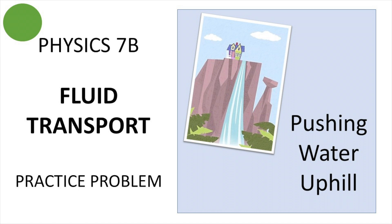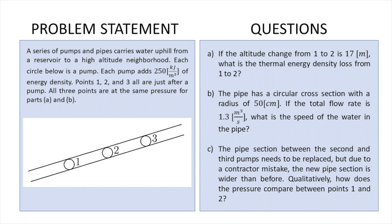So the problem goes as follows. A series of pumps and pipes carries water uphill from a reservoir to a high-altitude neighborhood. Each circle below is a pump. Each pump is gonna add 250 kilojoules of energy density. Points one, two, and three are all just after a pump. The three points are at the same pressure for parts A and B. So we have to solve these three questions. Please make sure to pause the video in order to copy the instructions on your notebook. I'm just gonna go ahead and read the first one and start there.